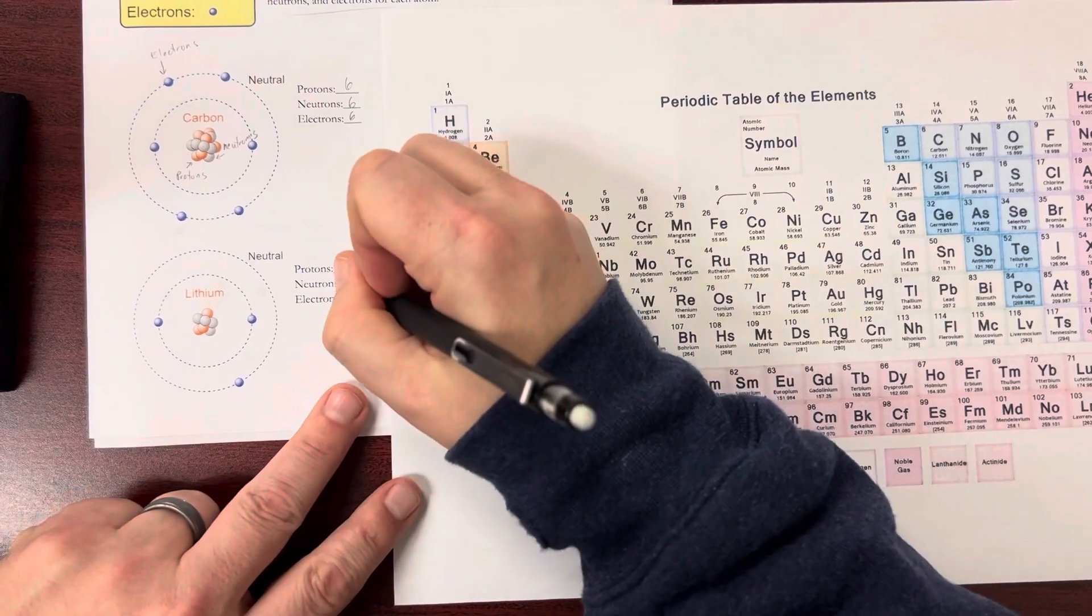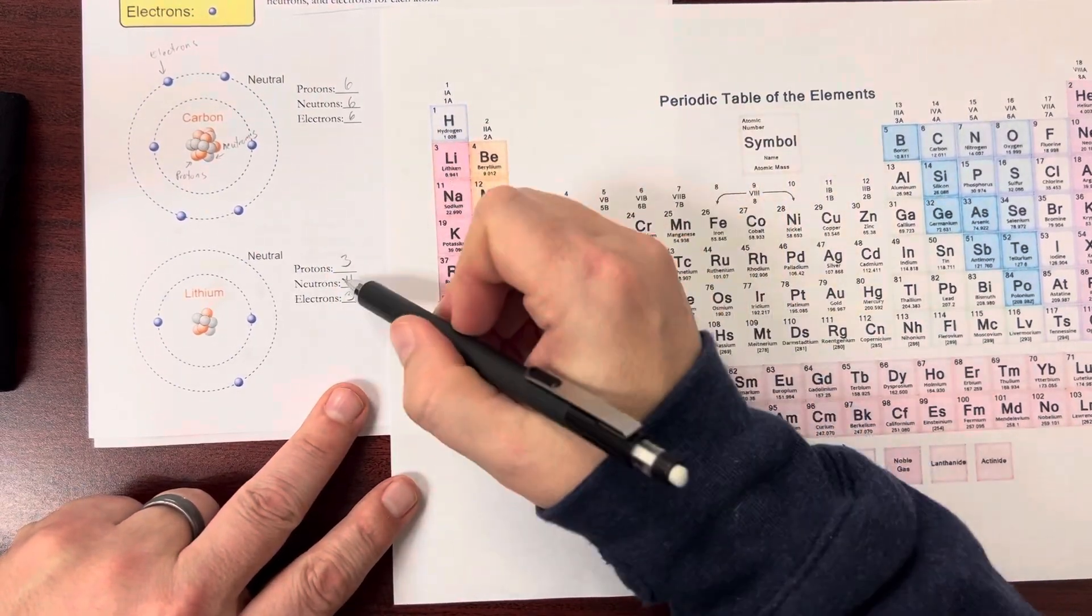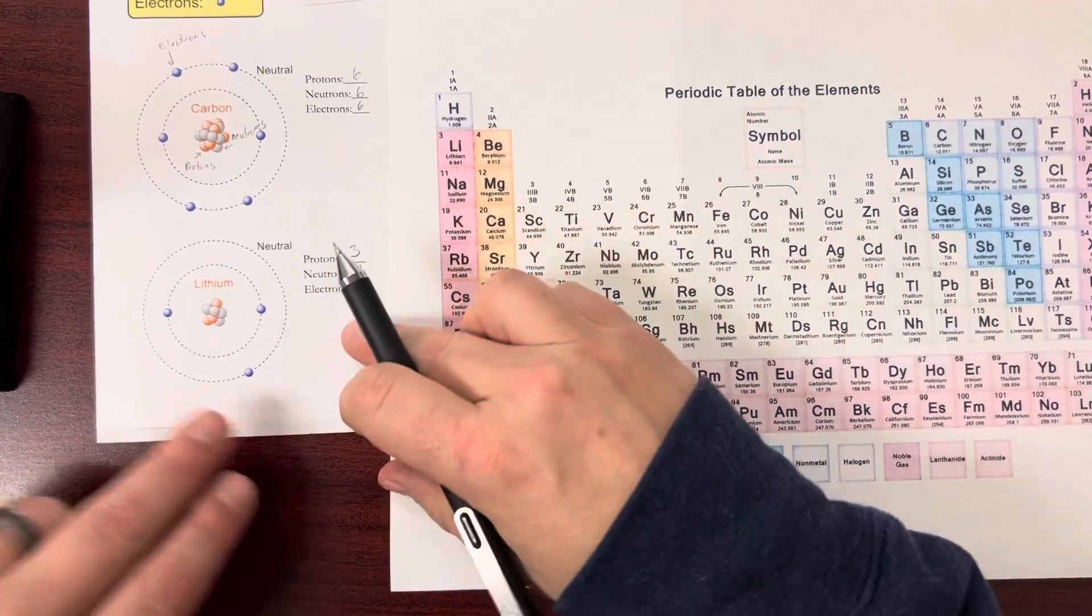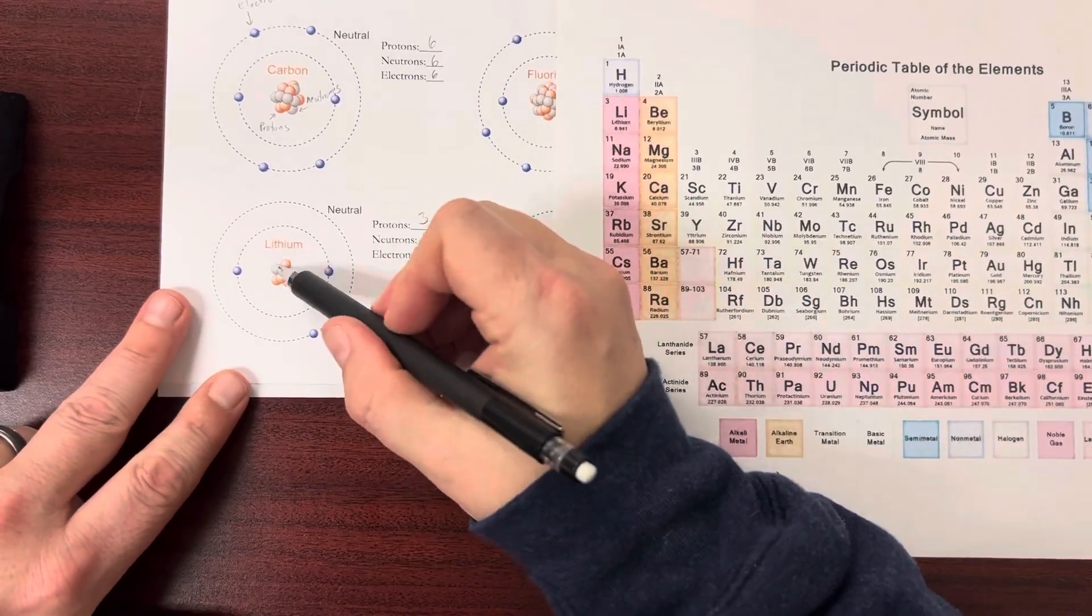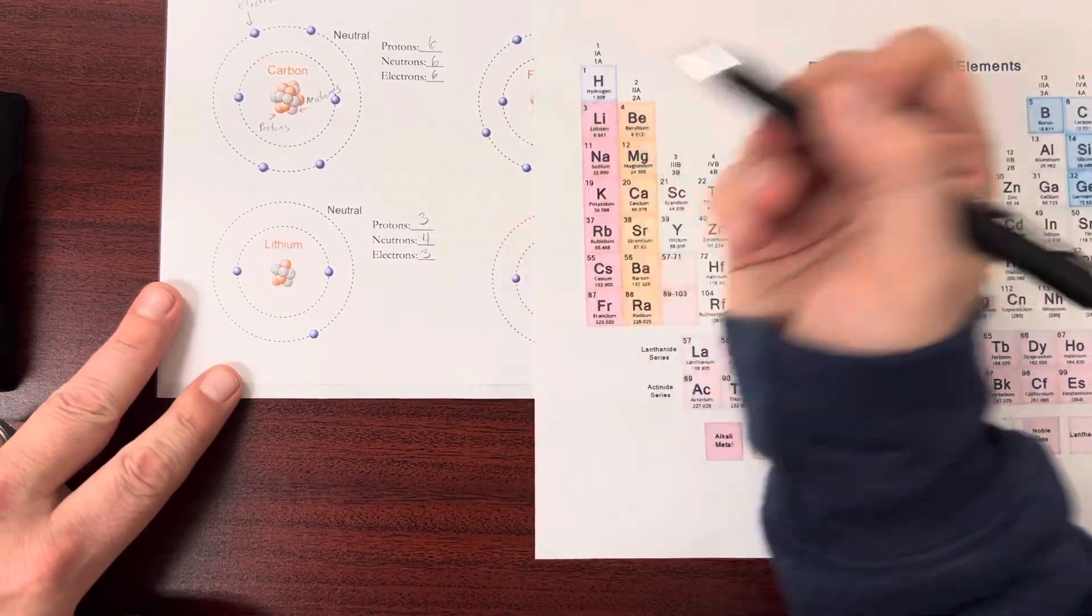So that means protons plus neutrons equals 7. Well, 3 plus 4 equals 7. So I didn't even have to count them here. But I can go back. Neutrons. 1, 2, 3, 4. So indeed, there are 4 of them.